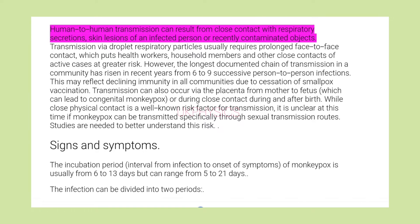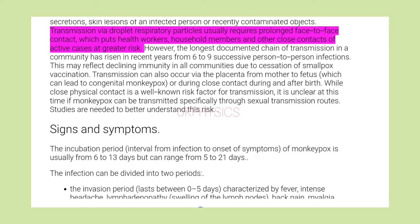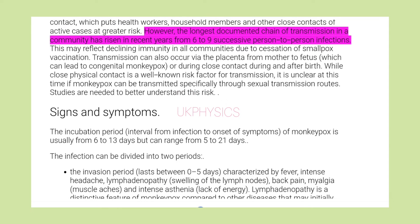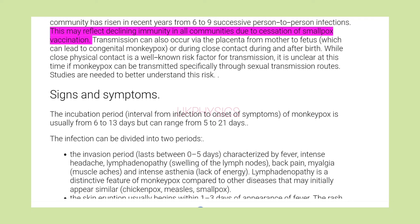Human-to-human transmission can result from close contact with respiratory secretions, skin lesions of an infected person or recently contaminated objects. Transmission via droplet respiratory particles usually requires prolonged face-to-face contact, which puts health workers, household members and other close contacts of active cases at greater risk. However, the longest documented chain of transmission in a community has risen in recent years from six to nine successive person-to-person infections.